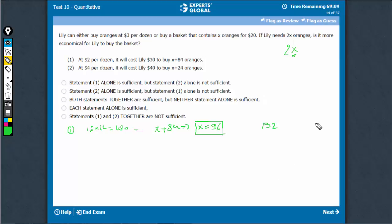If she buys at the dozen rate, it's going to cost her 192 divided by 12, which is 16 dozens. It's going to cost her 16 dozens. So, $32 at $2 per dozen.